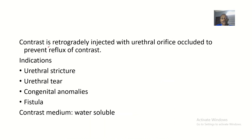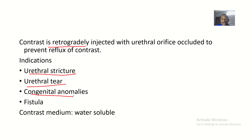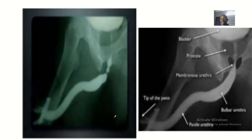The contrast is retrogradely injected with the ureteral orifice occluded to prevent reflux of the contrast. Retrograde urethrography is used to indicate ureteral stricture, tears in the ureter, congenital anomalies, and fistulas. The contrast medium used should be water soluble.